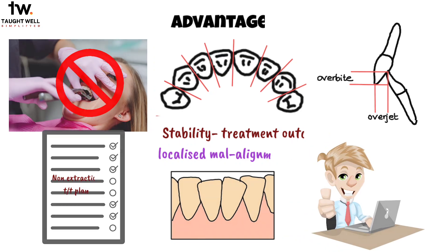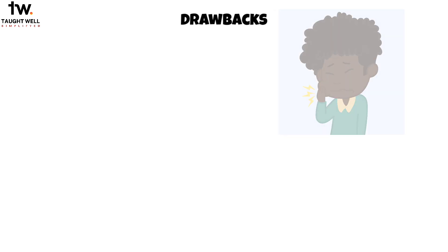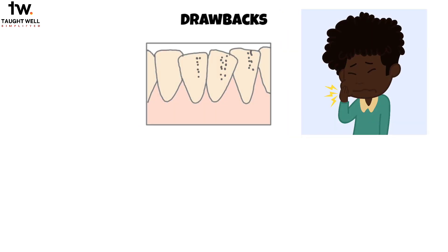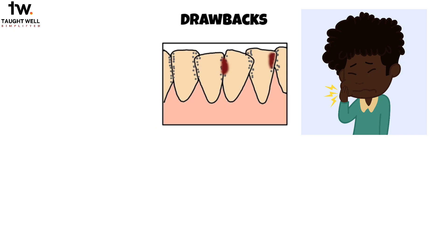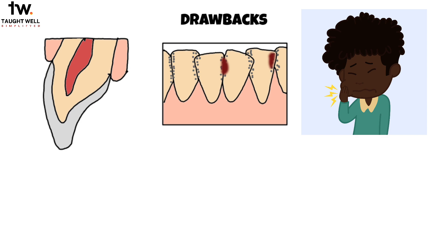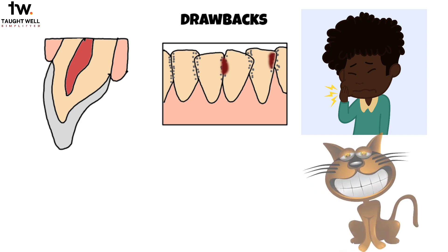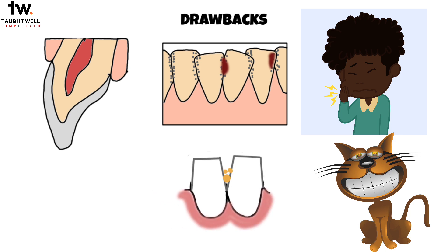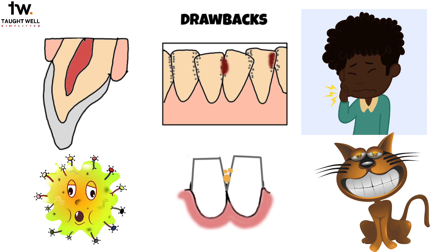However, proximal stripping has its drawbacks. One common issue is post-procedure sensitivity experienced by patients. The roughened enamel surface created during stripping increases the susceptibility to caries. Another challenge is reproducing the exact tooth morphology, particularly for maxillary anterior teeth, which may affect the aesthetic outcome. Additionally, the loss of proximal contacts due to stripping can result in food getting lodged between the teeth, leading to potential hygiene concerns.